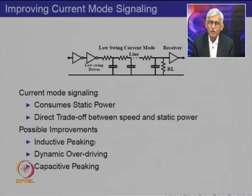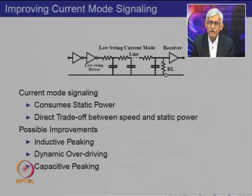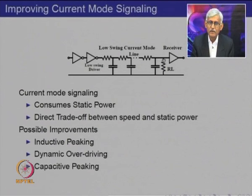One of them is called inductive peaking. The idea is that rather than terminating the line in a pure resistance, we terminate it in a load which has an inductive component. Because of this, the termination has a high-pass characteristic, which to some extent mitigates the low-pass characteristic of the line. As a result, we can enhance the bandwidth and get higher speed transmission on the same infrastructure.